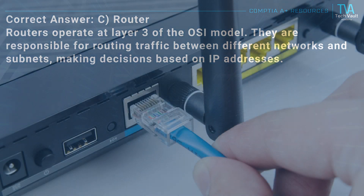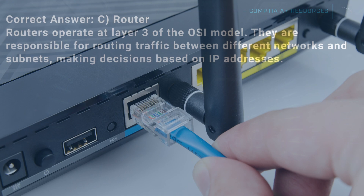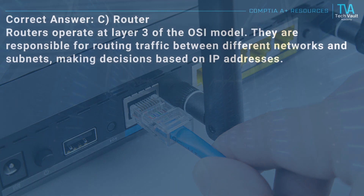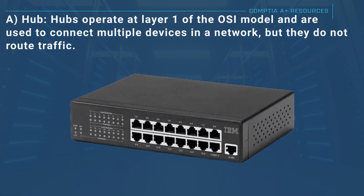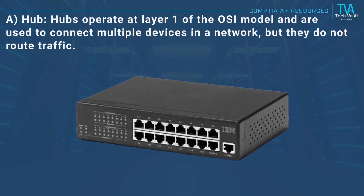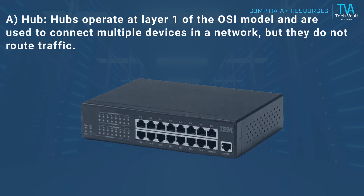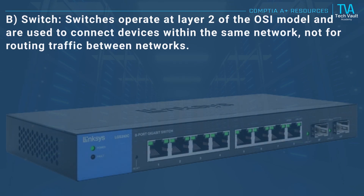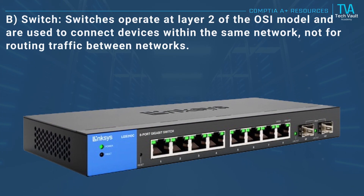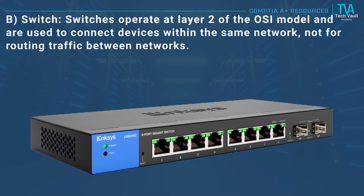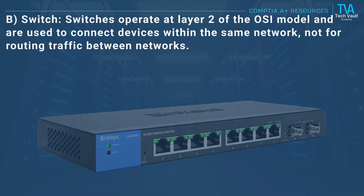Correct answer: C, router. Routers operate at layer 3 of the OSI model. They are responsible for routing traffic between different networks and subnets, making decisions based on IP addresses. A, hub: hubs operate at layer 1 of the OSI model and are used to connect multiple devices in a network, but they do not route traffic. B, switch: switches operate at layer 2 of the OSI model and are used to connect devices within the same network, not for routing traffic between networks.